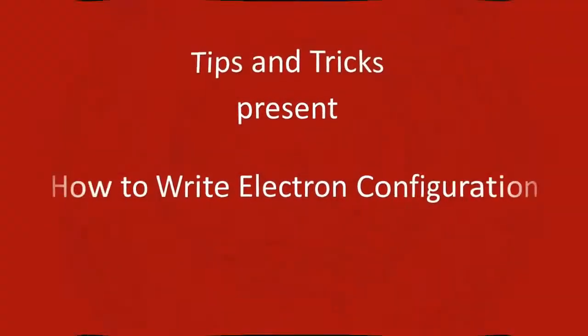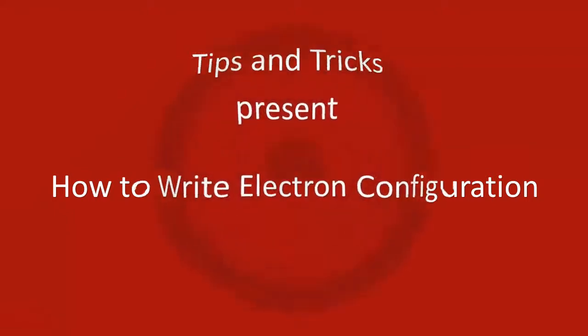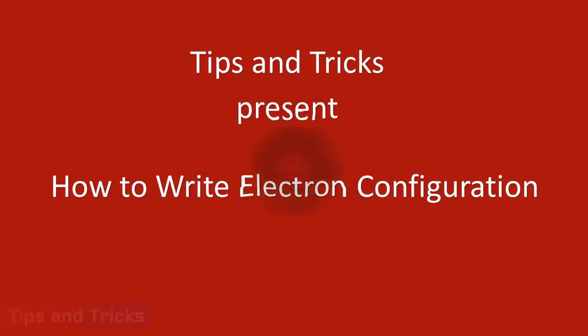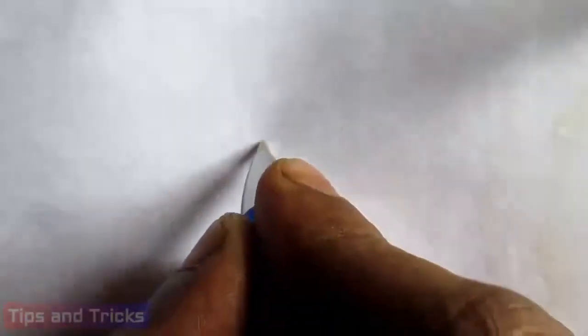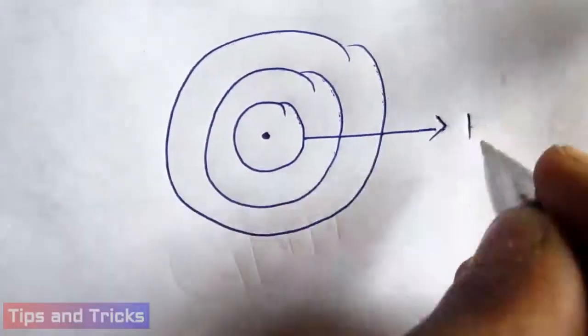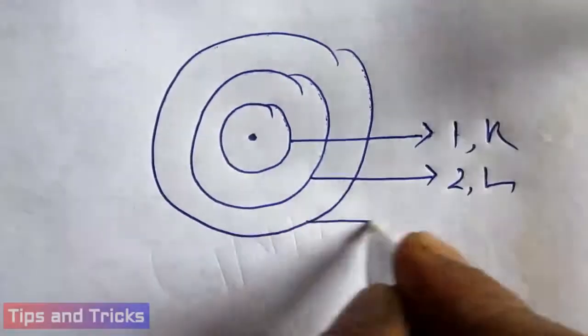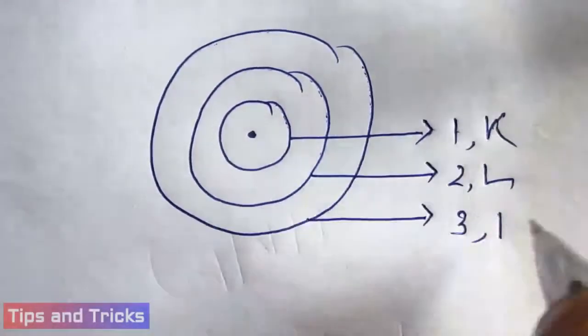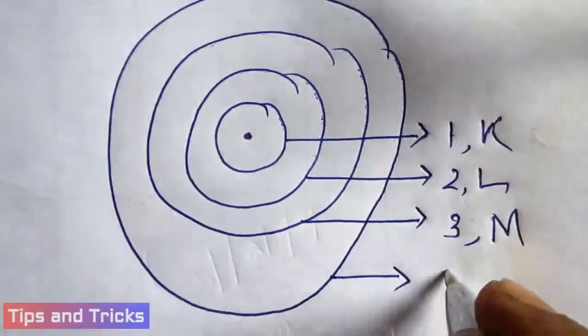Welcome to Tips and Tricks. Tips and Tricks present how to write electron configuration. Electron configuration of an atom: suppose there is a center, then circular orbits like K, L, M, and they are surrounded by electron cloud.